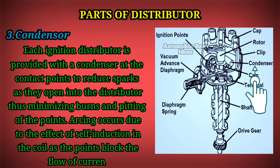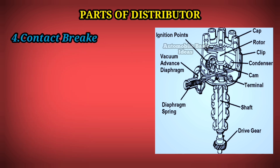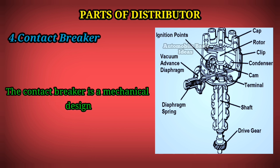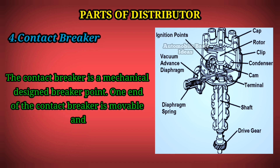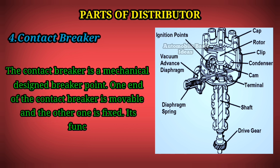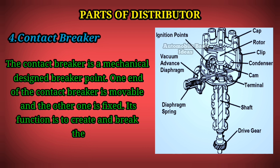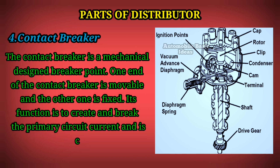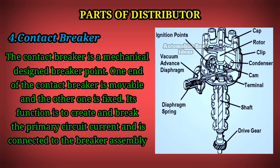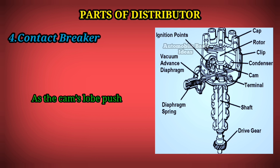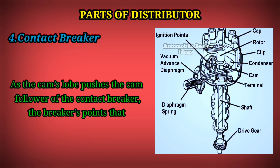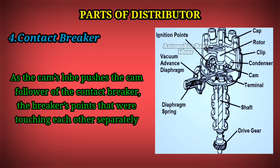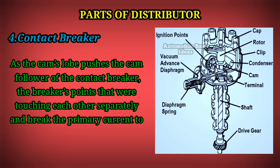4. Contact Breaker: The contact breaker is a mechanically designed breaker point. One end of the contact breaker is movable and the other one is fixed. Its function is to create and break the primary circuit current. As the cam slope pushes the cam follower of the contact breaker, the breaker points that were touching each other separate and break the primary current flowing through the ignition coil's primary winding.